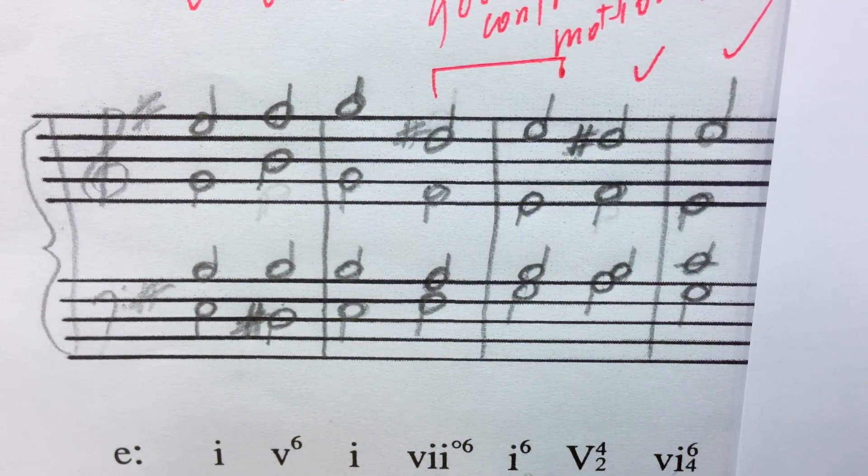Your 1-6 chord is a 1 chord in first inversion. Then he heads up to scale degree 4 in the bass and he uses a 5-4-2. 5-4-2 is the third inversion of a 5-7 chord.